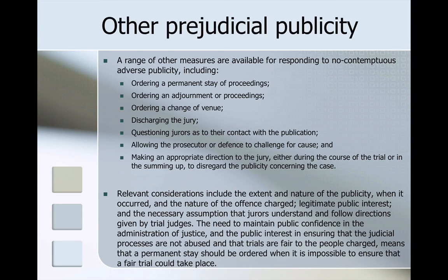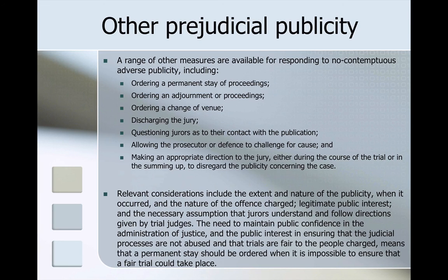A range of other measures are available for responding to non-contemptuous adverse publicity, including ordering a permanent stay of proceedings, an adjournment, a change of venue, discharging the jury and swearing in a new jury, questioning jurors as to their contact with the publication, allowing challenges for cause, or making an appropriate direction to the jury during the trial or in the summing up to disregard the publicity. Relevant considerations include the extent and nature of the publicity, when it occurred, the nature of the offence charged, legitimate public interest, and the necessary assumption that jurors understand and follow directions given by trial judges. A permanent stay should be ordered when it is impossible to ensure that a fair trial could take place.